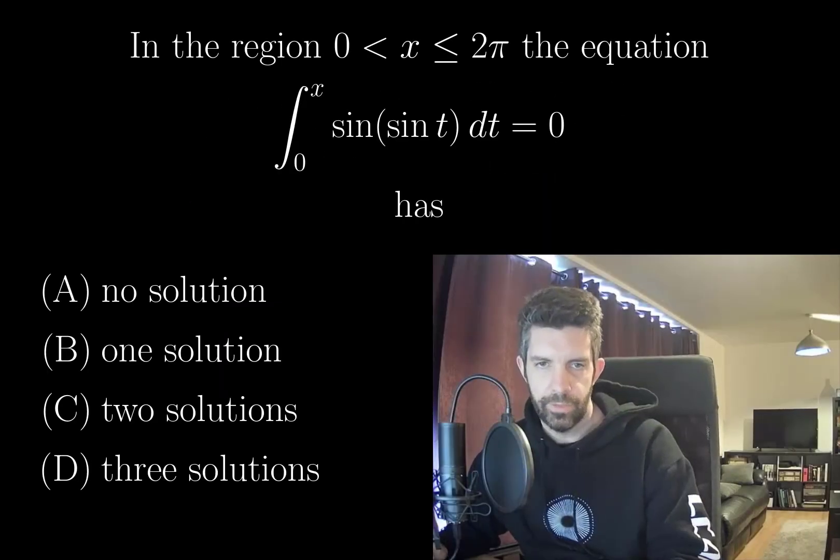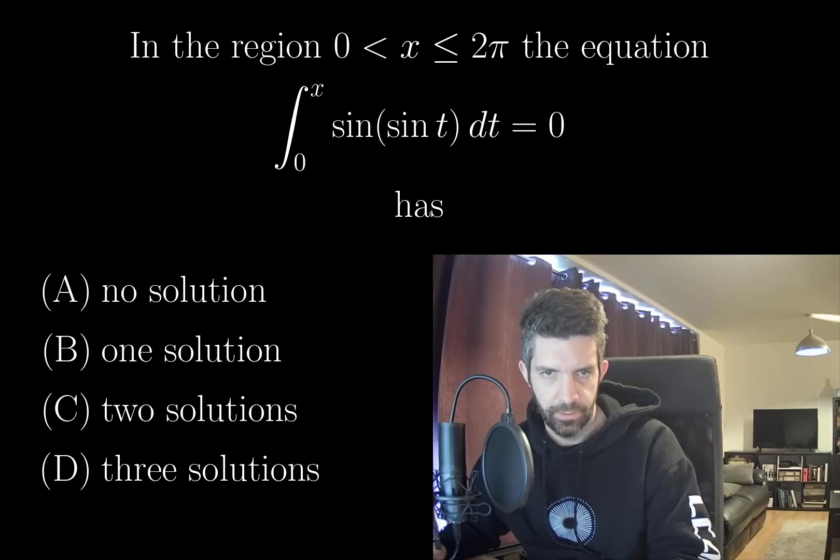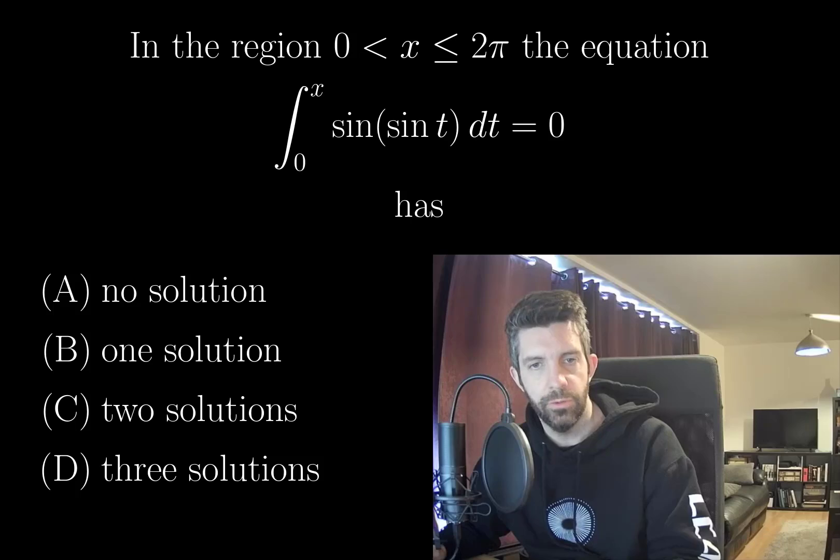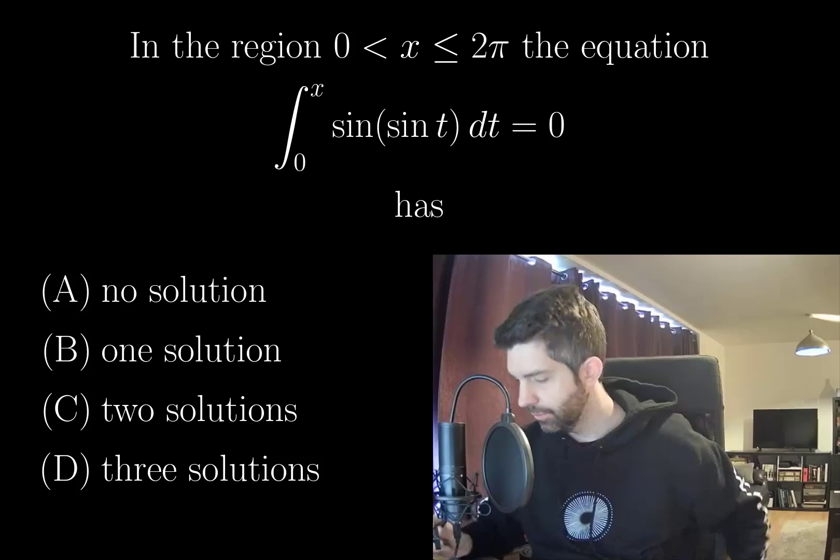In the region 0 less than x less than or equal to 2 pi, the equation integral from 0 to x of sine of sine t dt equals 0 has no solution, one solution, two solutions, or three solutions.